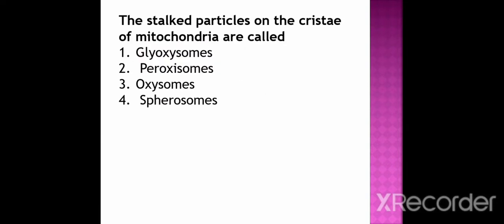The first question is: the stalked particles of cristae of mitochondria are called — option 1 Glyoxysome, option 2 Peroxysomes, option 3 Oxysomes, and option 4 is Severosome. The correct option is Oxysomes.